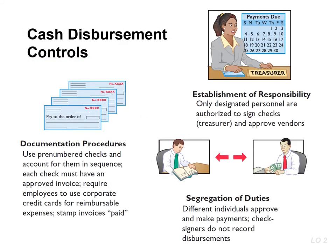Companies disburse cash to pay expenses and liabilities or to purchase assets. Generally, internal control over cash disbursements is more effective when payments are made by check or electronic funds transfer, rather than by cash.